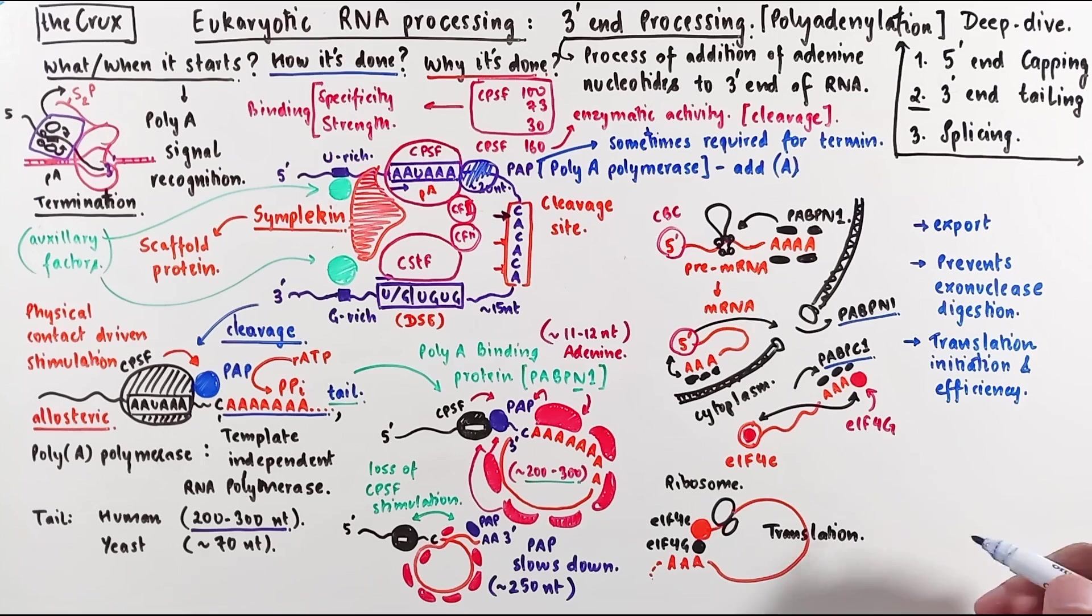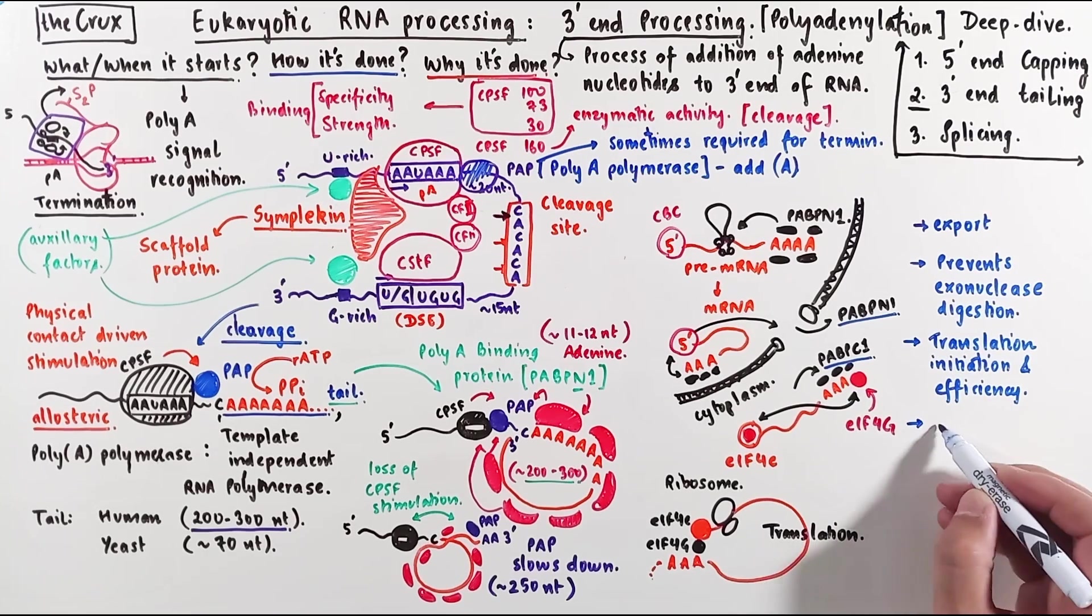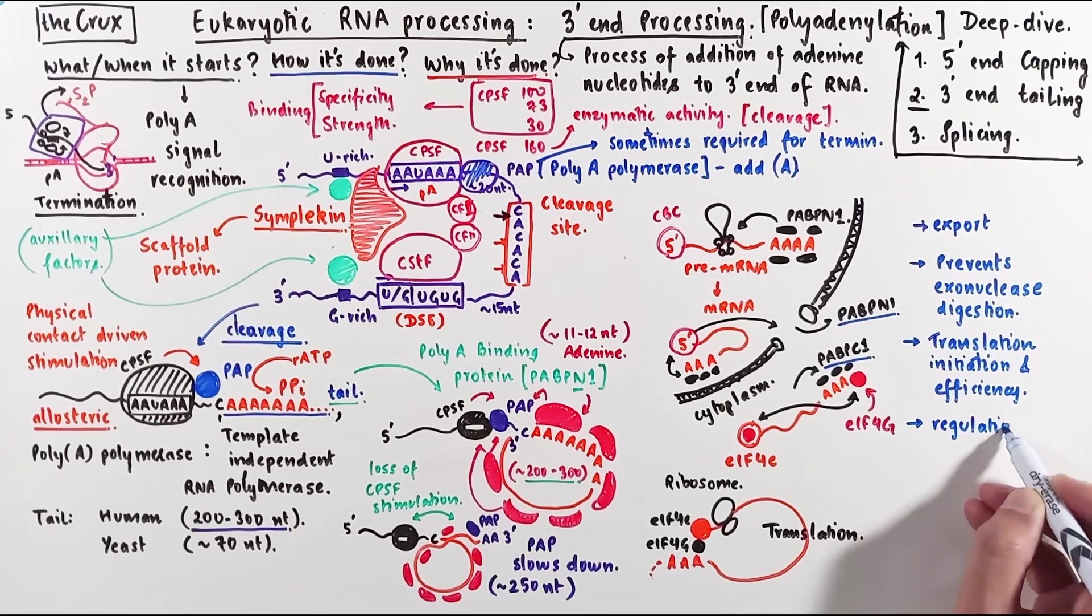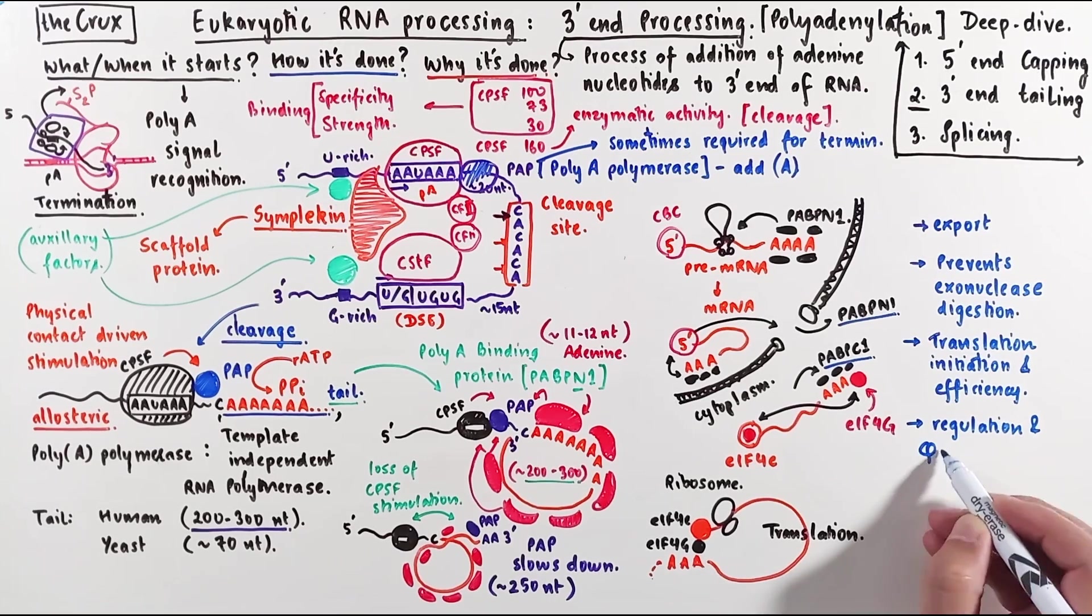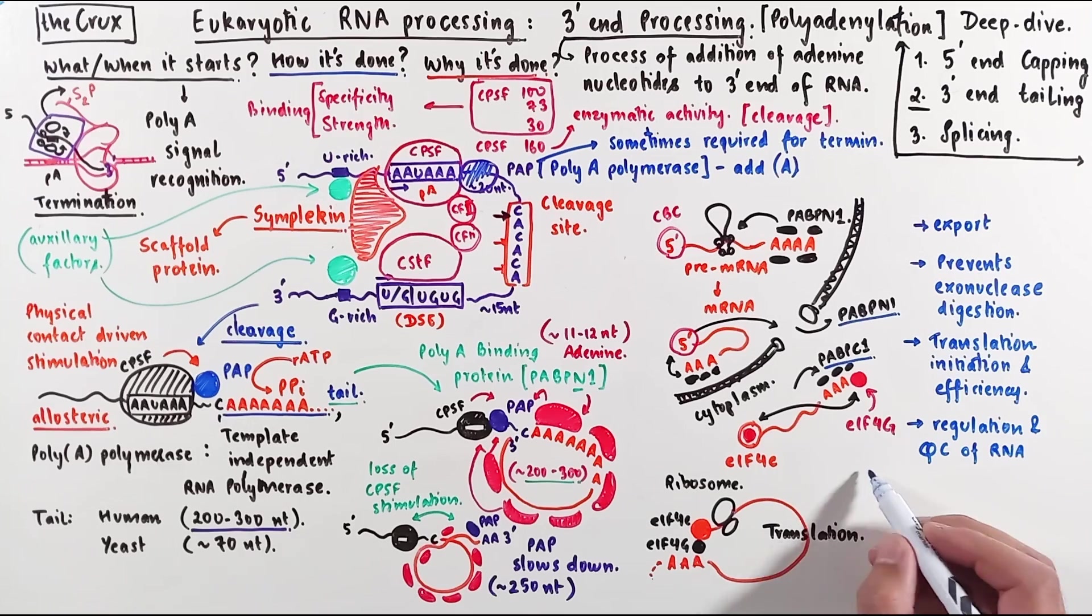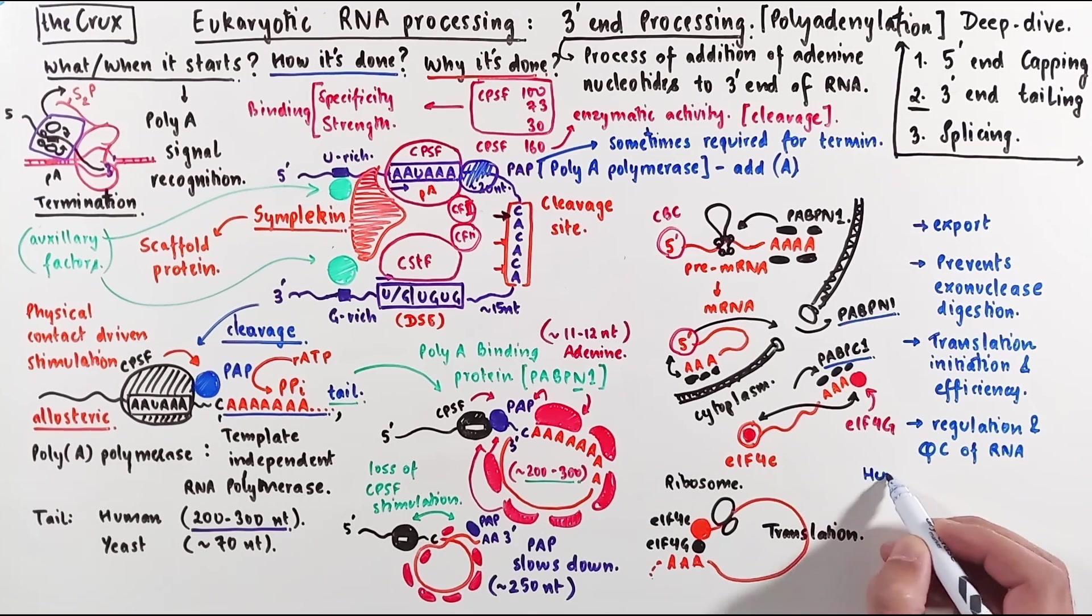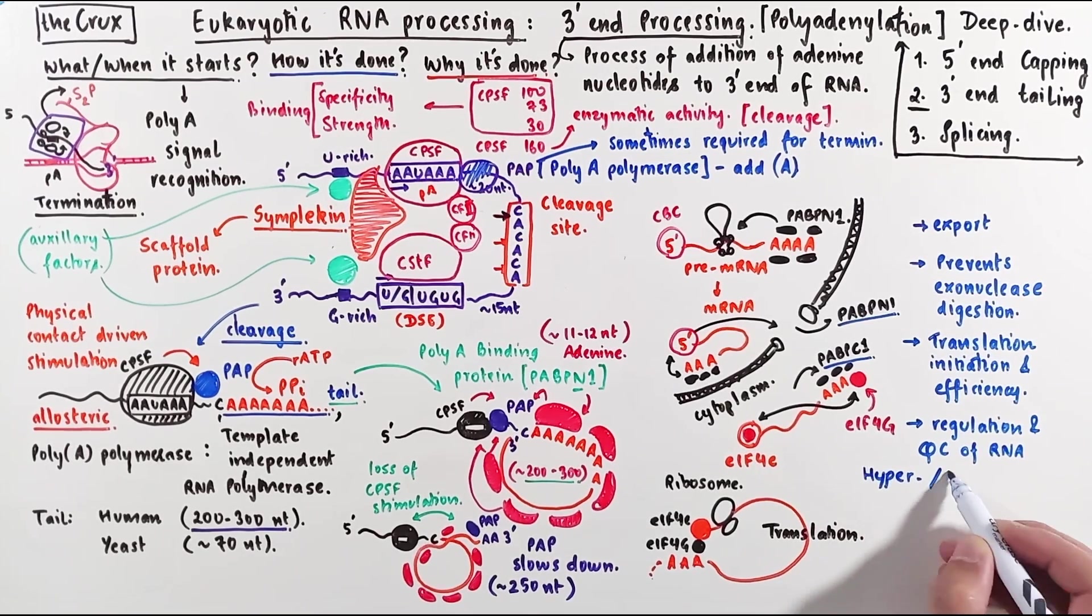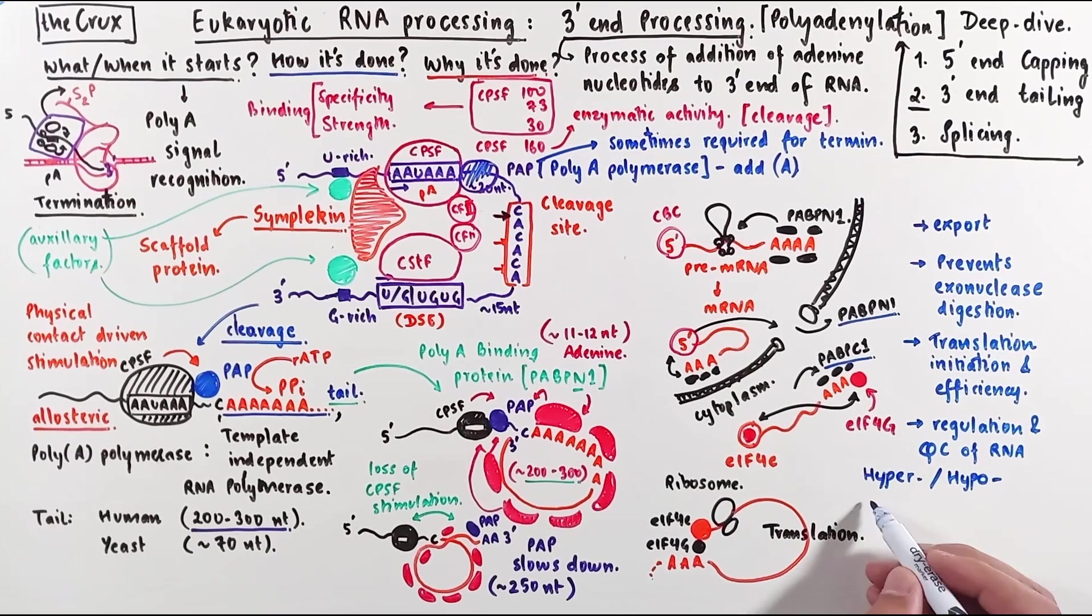One thing that we haven't discussed but offers a great advantage to the mRNA is that the polyA tails also help in the regulation of the genes. And they're very important in the quality checks of the RNA. For instance, in certain conditions or signals, you can have hyper or hypopolyadenylation of the RNA.